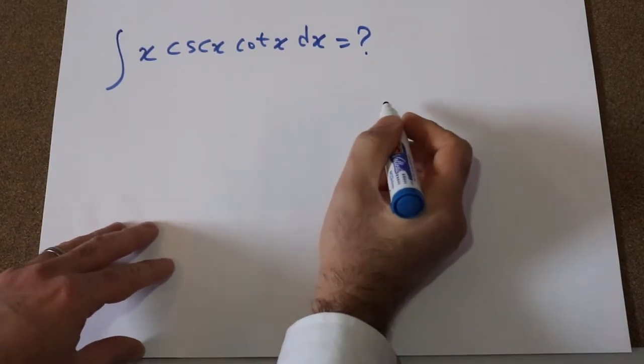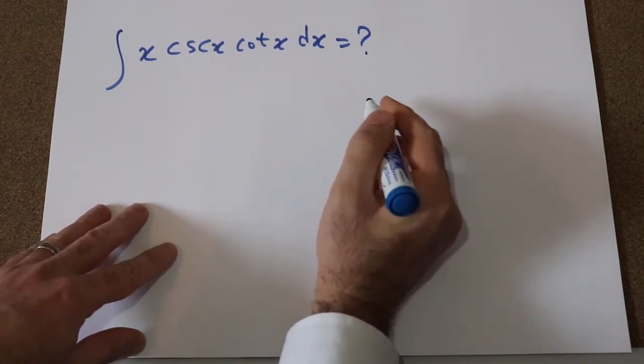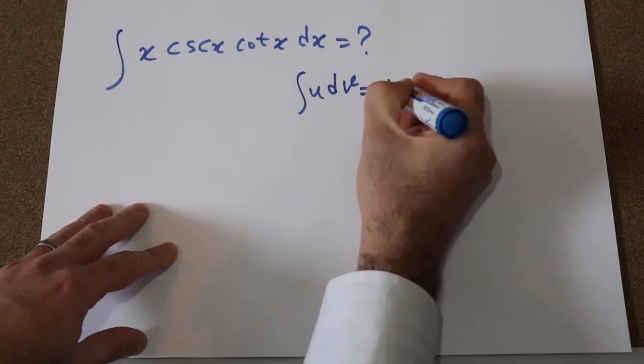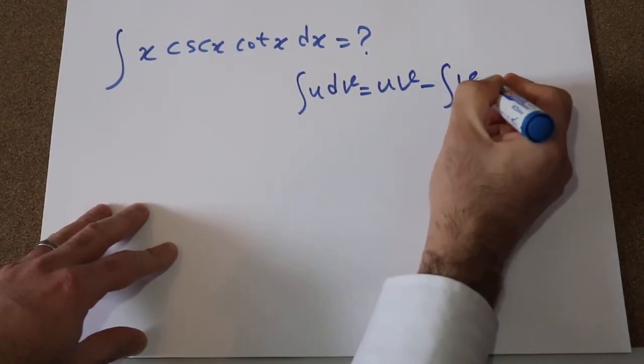You can solve this integral using the formula for integration by parts: integral of u dv is equal to uv minus integral of v du.